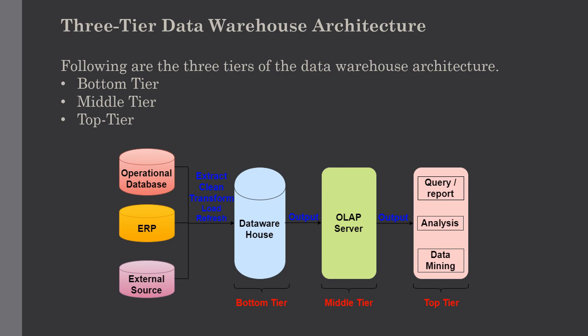We use backend tools and utilities to feed data into the bottom tier. These backend tools and utilities perform the extraction, cleaning, and loading of data, as well as refreshing functions. We have already discussed how the extract, clean, and load process happens in the data warehouse. Our next tier is the middle tier, where we have the OLAP servers.